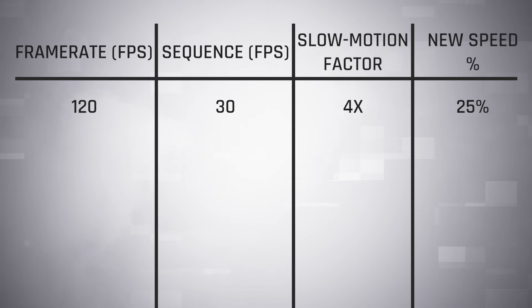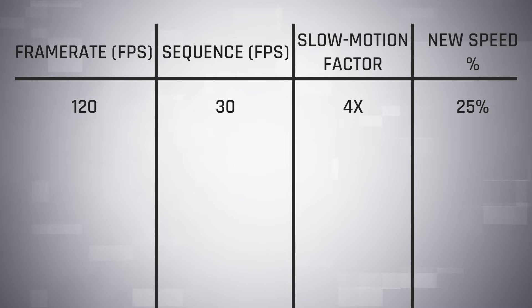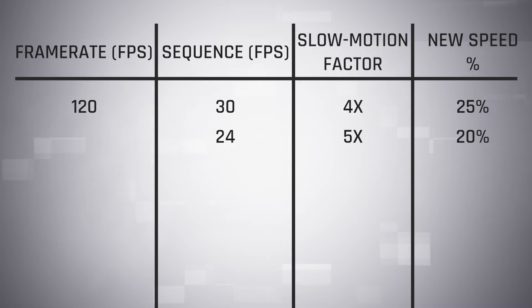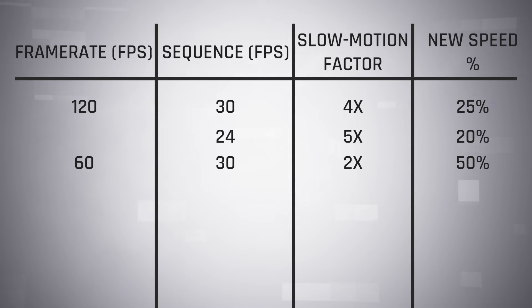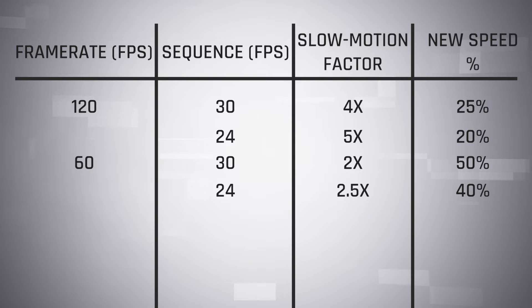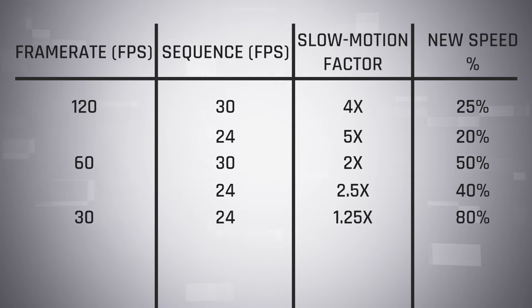If you have 120 frames per second footage, you can slow this down by four times in a 30fps timeline by reducing to 25%, or by five times in a 24fps timeline by reducing to 20%. If you have 60fps footage, you can reduce this to 50% in a 30fps timeline or 40% in a 24fps timeline. You can smoothly slow down 30fps footage to 80% its original speed in a 24fps timeline.